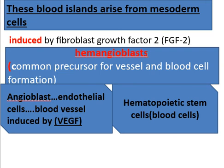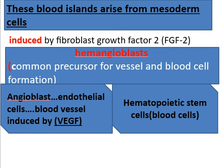Hemangioblasts are the common precursor for both vessel and blood cell formation. So blood vessels as well as blood cells are going to develop from the hemangioblasts. After hemangioblasts are formed in the mesodermal cells, there will be the formation of angioblasts at the peripheral area. The peripheral area is occupied by angioblasts. Hemangioblasts will develop into angioblasts.